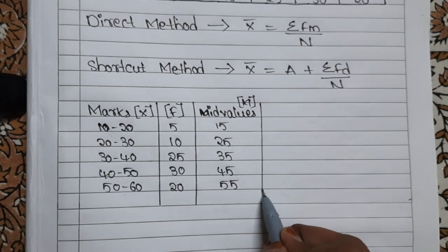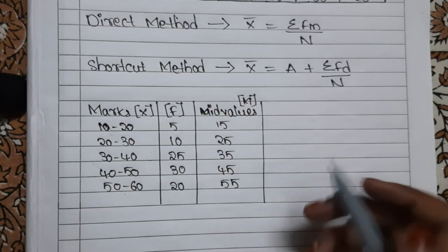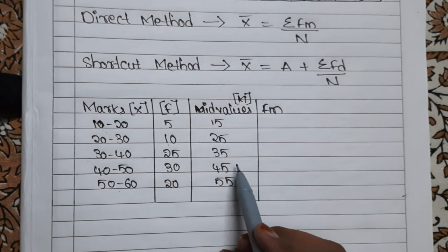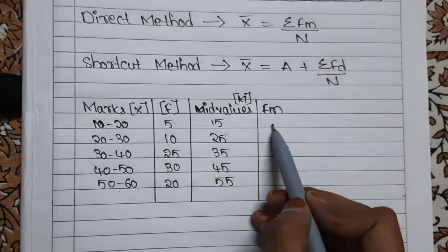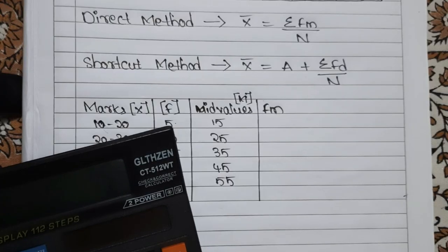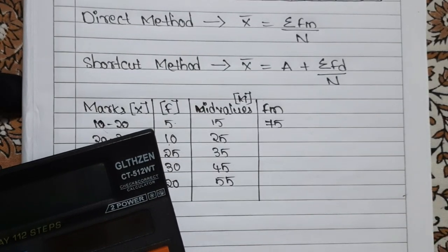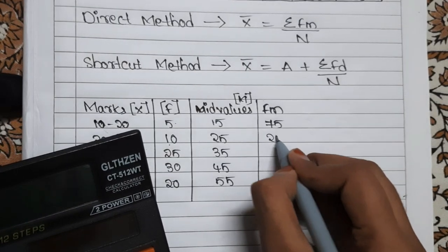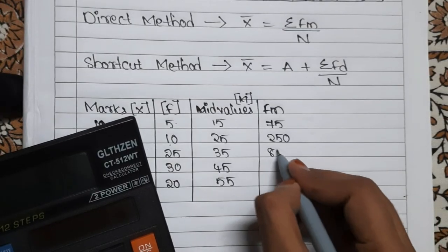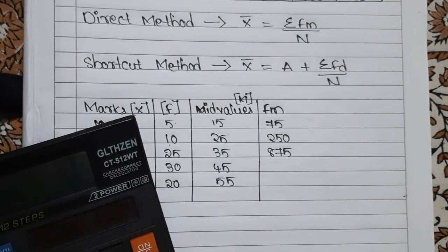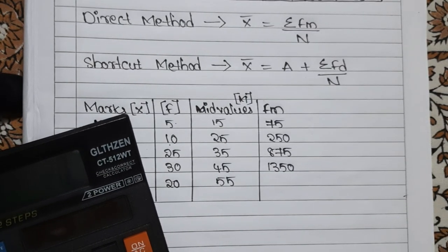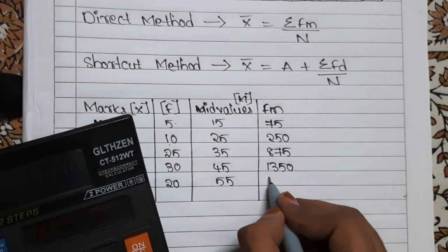Now we need to calculate FM — that is, frequency multiplied by mid values. So: 5 into 15 equals 75; 10 into 25 equals 250; 25 into 35 equals 875; 30 into 45 equals 1350; and 20 into 55 equals 1100.